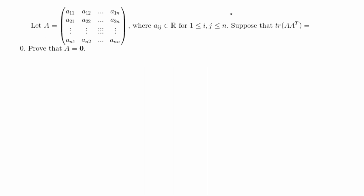In this video I'm going to do this linear algebra proof. It says: let A be an n by n matrix where every entry is a real number. For any size n, suppose that the trace of A times A transpose is equal to zero, and we have to prove that if that's true then A must be a zero matrix.